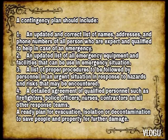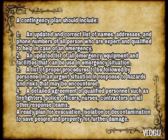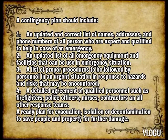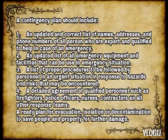A contingency plan should include: Number 1, an updated and correct list of names, addresses, and phone numbers of all persons who are expert and qualified to help in case of an emergency; Number 2, an updated list of all emergency equipment and facilities that can be used in an emergency situation; Number 3, a list of proper procedures to be followed by personnel in urgent situations in response to hazards and risks that may be encountered; Number 4, a database of qualified personnel such as firefighters, police officers, nurses, contractors, and all other response teams; and a ready plan for evacuation, isolation, or decontamination to save people and property from further damage.